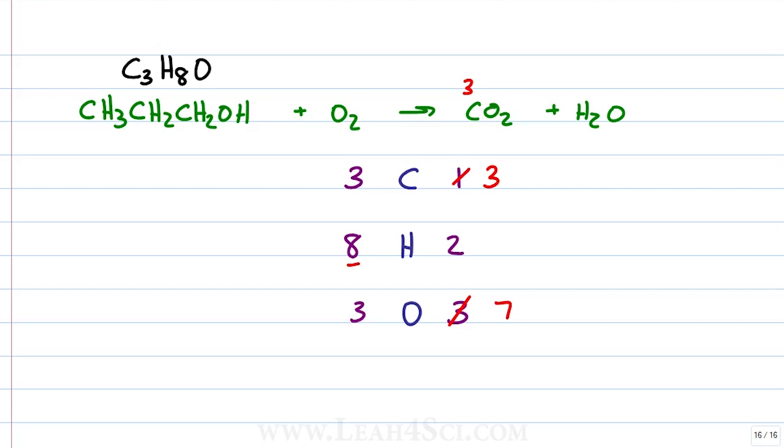Oxygen is off balance but let's hold off on it. We have 8 hydrogens in the reactants so let's put a 4 in front of H2O to give us 4 times 2 which is 8 hydrogens in the products. Once again we have to update oxygen. We have 3 times 2 is 6 plus 4 giving me 10. Now the carbons are balanced, hydrogens are balanced but we're dealing with an odd even situation. We have 3 oxygens in the reactants and 10 in the products.